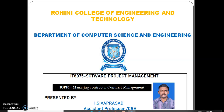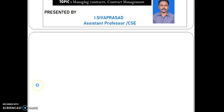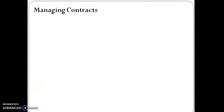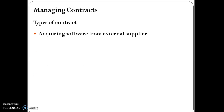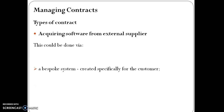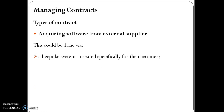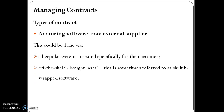Software project management — the topic is managing contracts and contract management. Types of contracts: acquiring software from an external supplier can be done via a bespoke system created specifically for the customer, or off-the-shelf bought access.